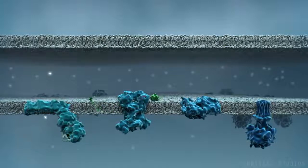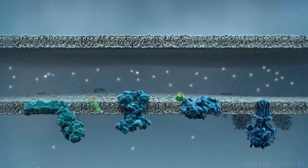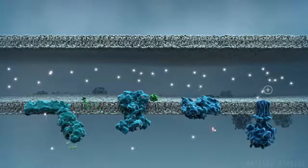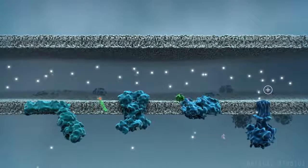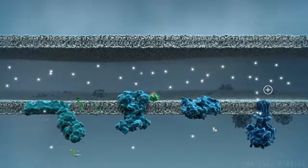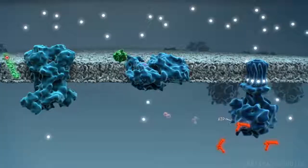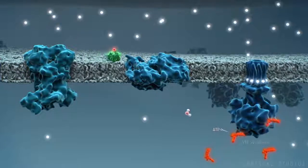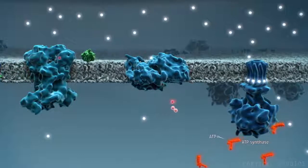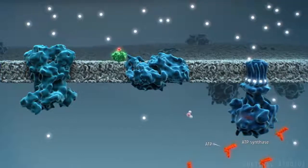This continuous pumping creates a proton gradient, where the positively charged protons are attracted to the more negative matrix. When the protons re-enter the matrix through the ATP synthase protein complex, they catalyze the production of ATP.